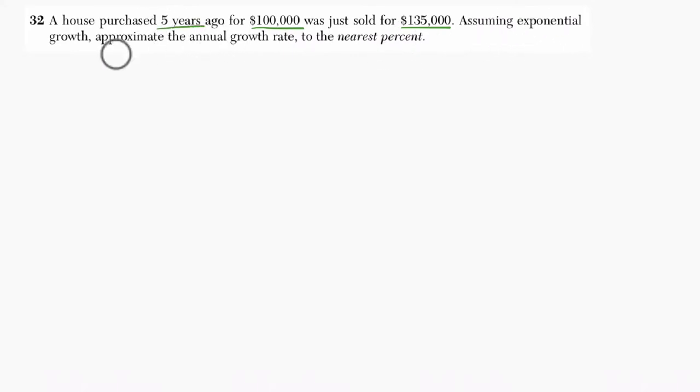Assuming exponential growth, approximate the annual growth rate to the nearest percent. The annual growth rate means it's growing once per year. We have some starting balance, in this case $100,000.